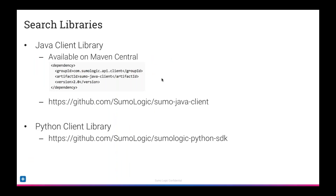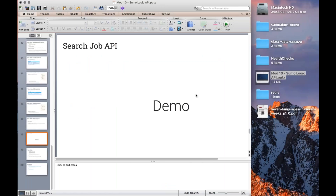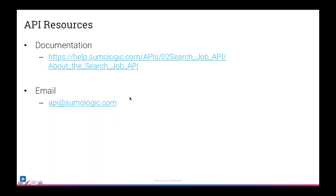We do have some SDKs built as wrappers for this API and our Collector API. We have a Java client library available on Maven Central — you can go to the GitHub URL to see all the documentation on how to interact with it. We also have a Python SDK for building Python applications. For additional resources, I've included a link to our documentation, which covers everything we talked about today. Should you have any problems or questions using the API, feel free to email api@sumologic.com and we'll be happy to help.